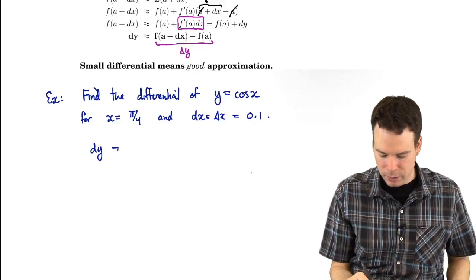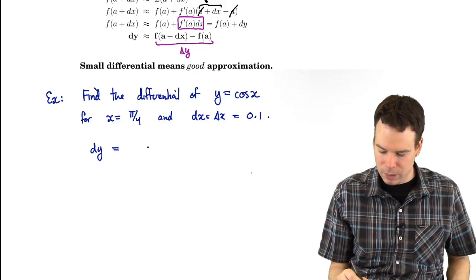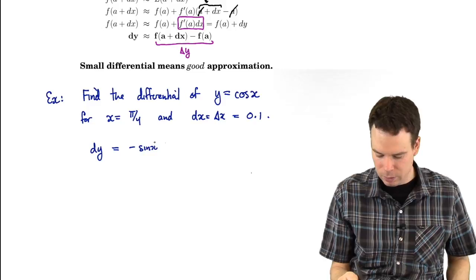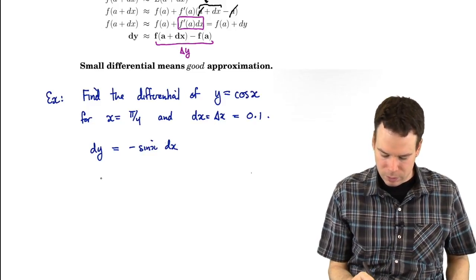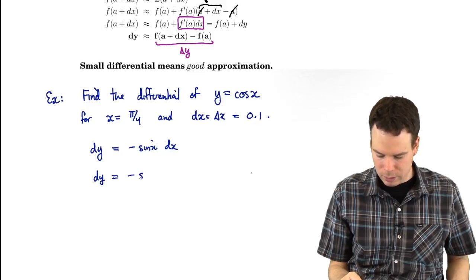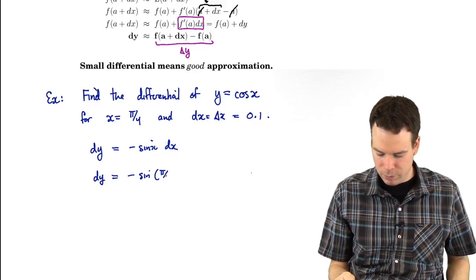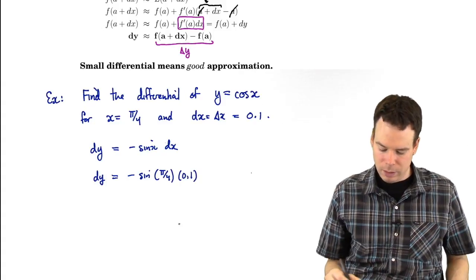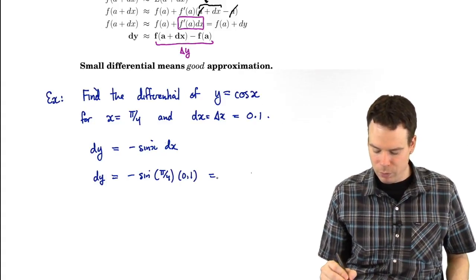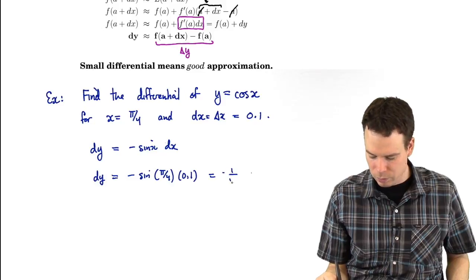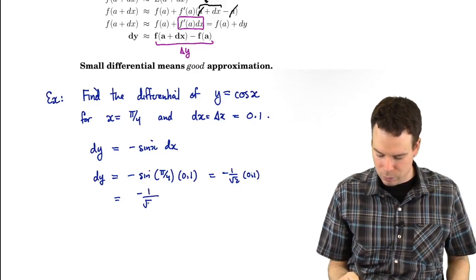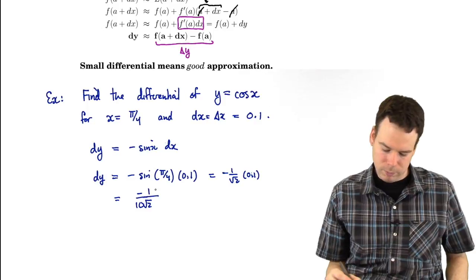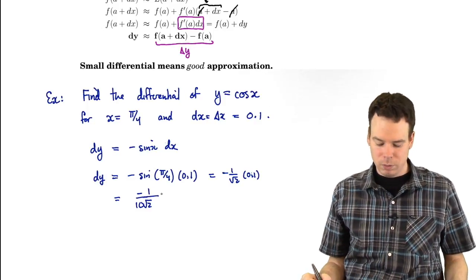The differential is dy equals the derivative times dx. The derivative of cosine is negative sine x, so dy equals negative sine x times dx. In the particular instance, dy equals negative sine of (pi over 4) times dx. Sine of pi over 4 is 1 over root 2, so dy equals negative 1 over root 2 times 0.1, which is negative 1 over (10 times root 2). So there's the differential.